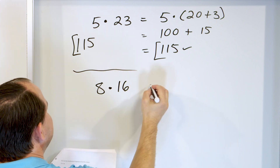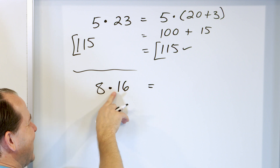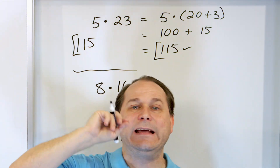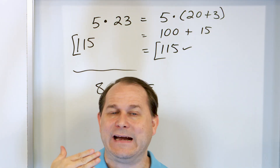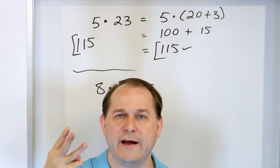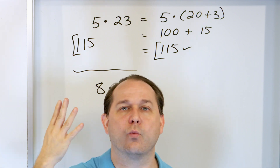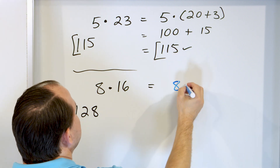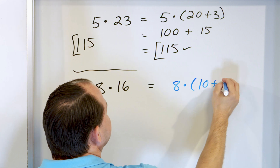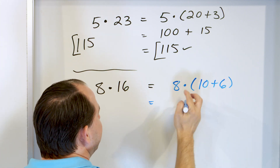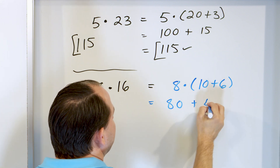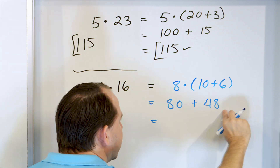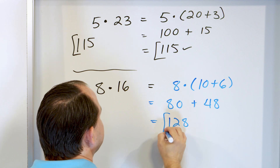What about 8 times 16? Let's see if we can get it in our mind. 8 times — this is worth 10. 8 times 10 is 80. Hold that in your mind: 80. 8 times 6 is 48. So we have 80 plus 48. Go up from 80: 90, 100, 110, 120, then 8 more — 128. Let's see if this matches reality: 8 times — we write this as 10 plus 6. Multiply: we get 80. Multiply: we get 48. And then going up: 90, 100, 110, 120, 128. That's the final answer.